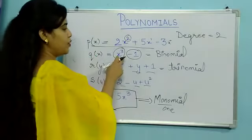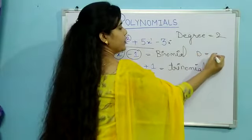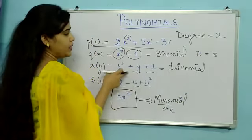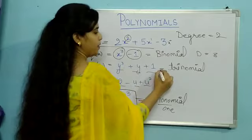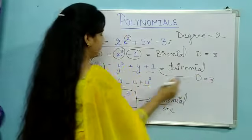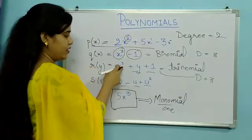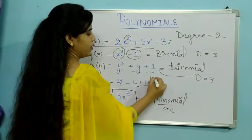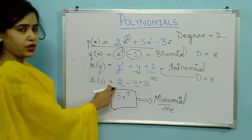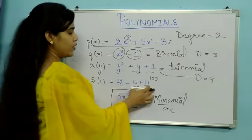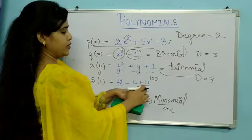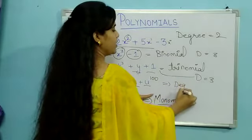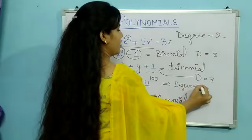This polynomial will be called a degree 3 polynomial because the highest power of x is 3. In this equation, the degree is also 3 because the highest power of y is 3. Similarly, if I make the power of u equal to 100, then the degree of that polynomial will be 100, because the highest power of u is u raised to the power 100.